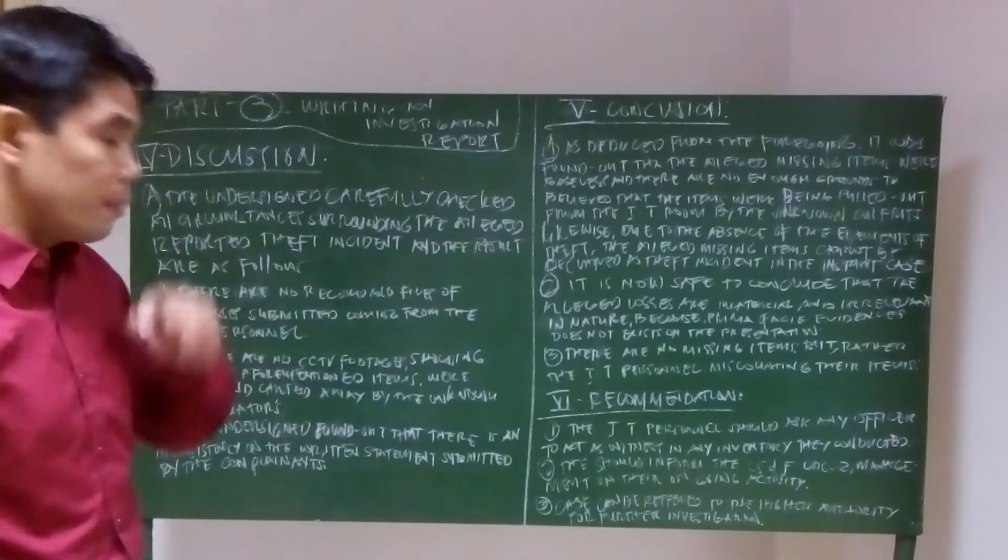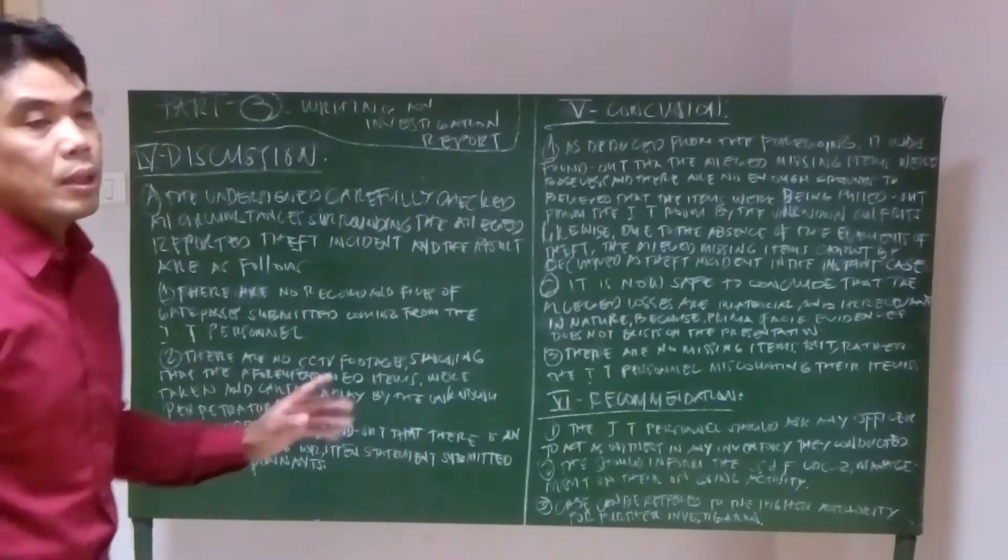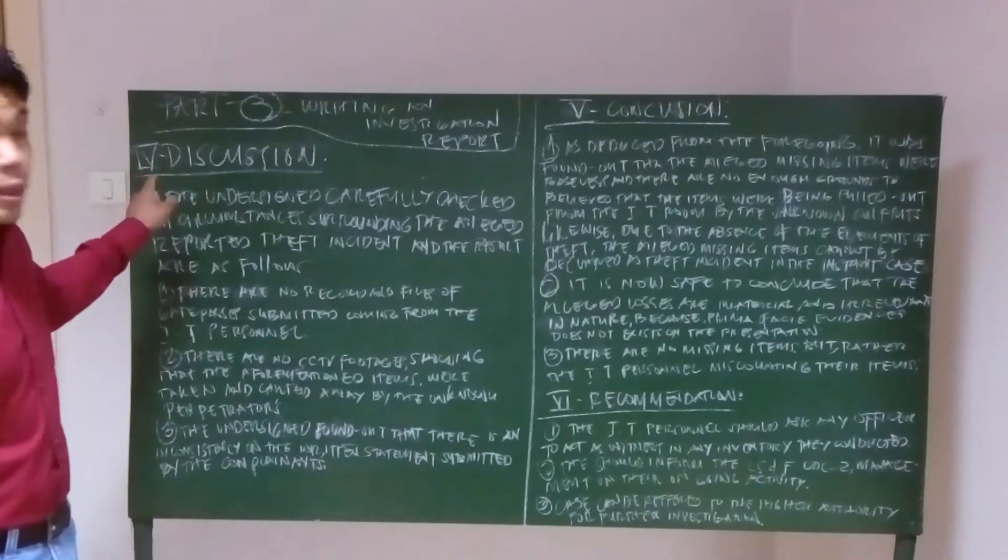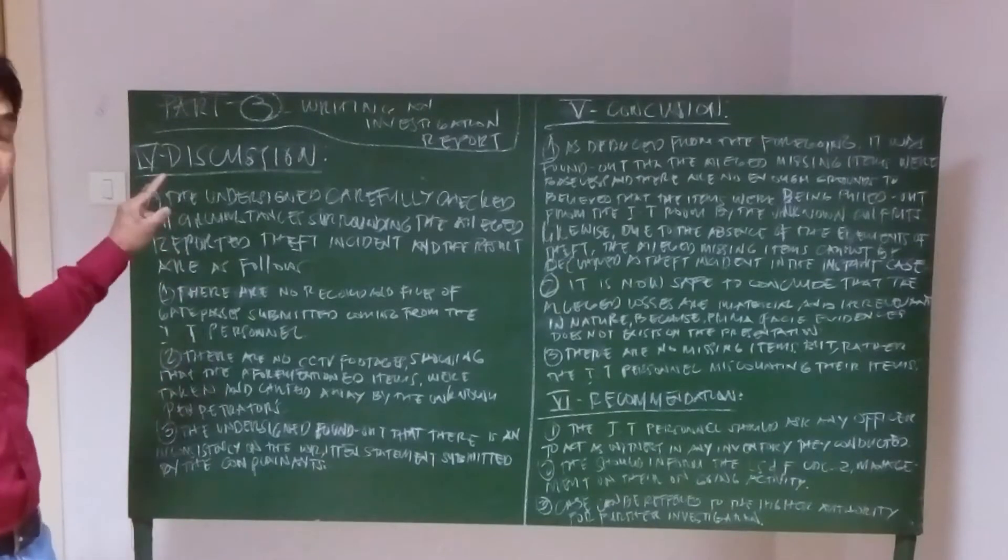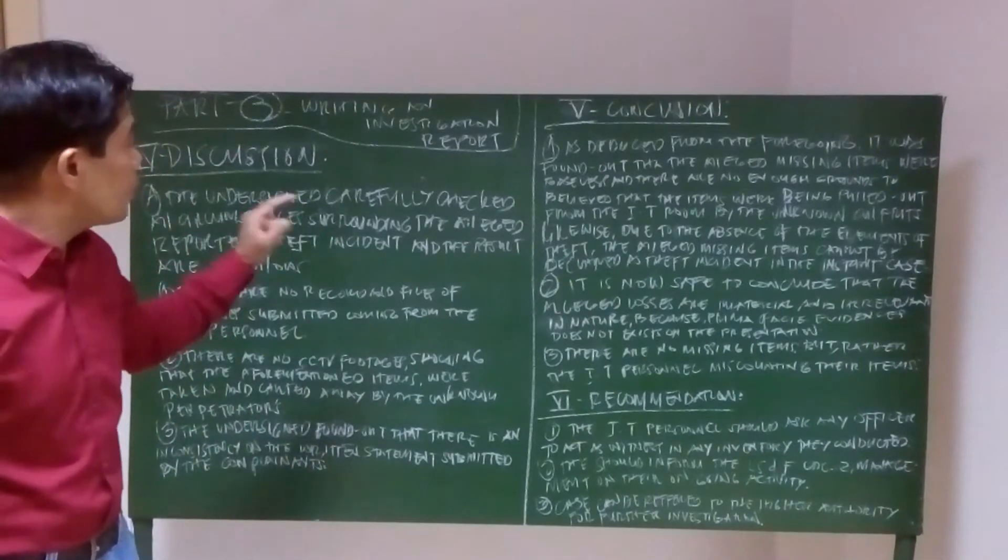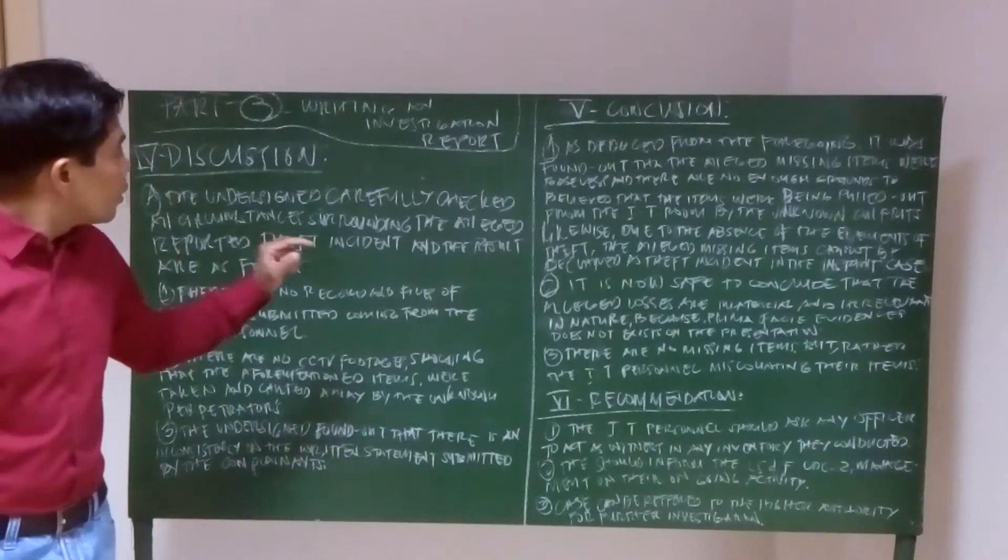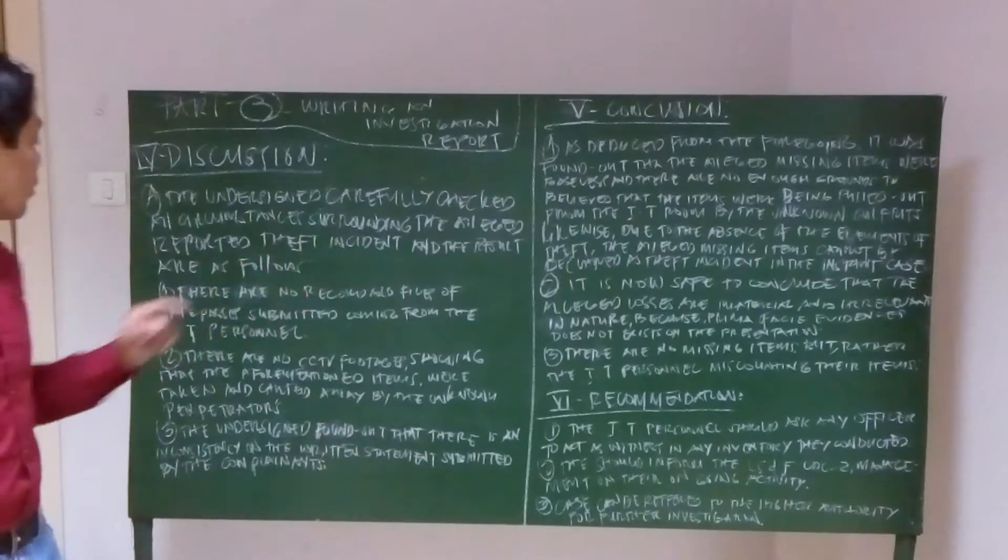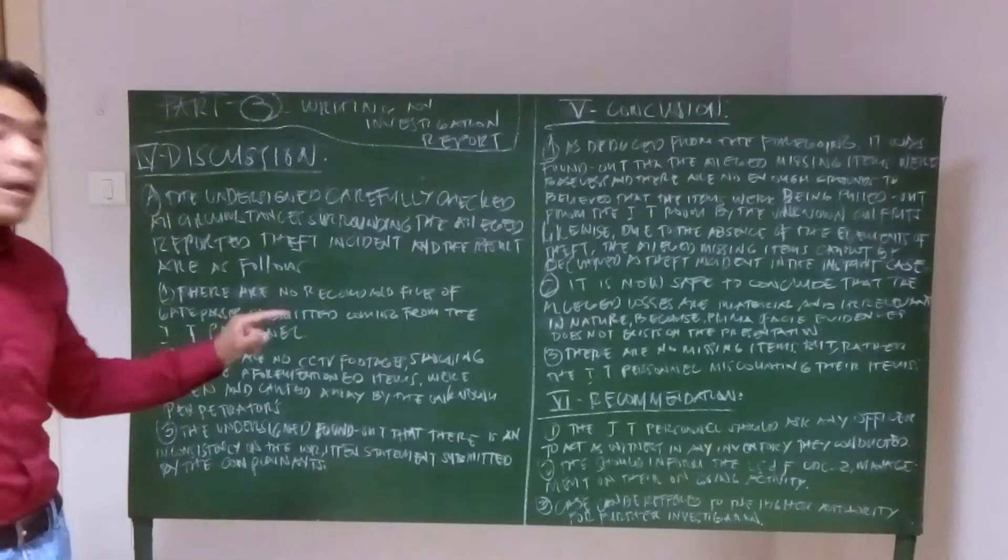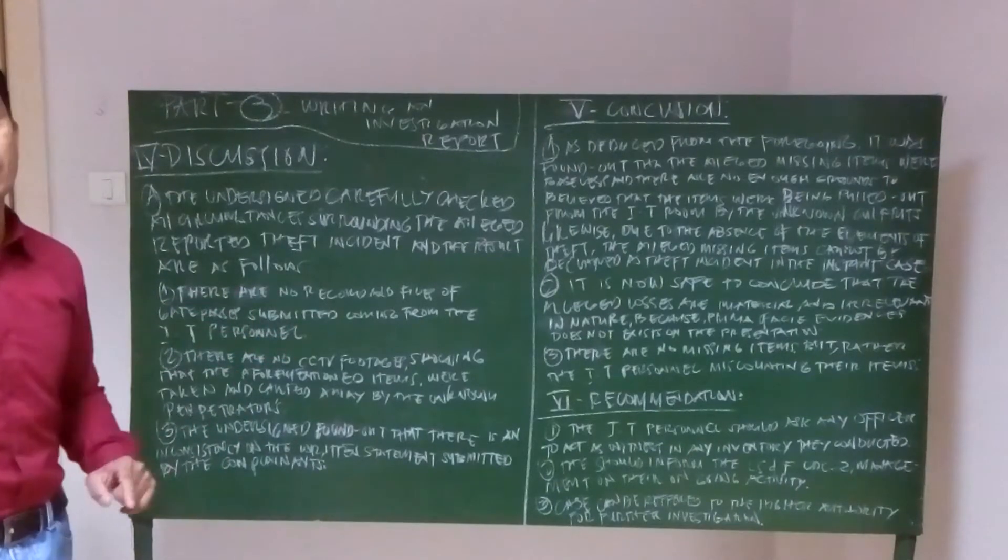From the facts of the case, we now discuss some matters. For example, in the discussion, letter A, the undersigned carefully checked all circumstances surrounding the alleged reported incident, and the results are as follows. Number one, there are no records and files of gate passes submitted coming from the IT personnel.